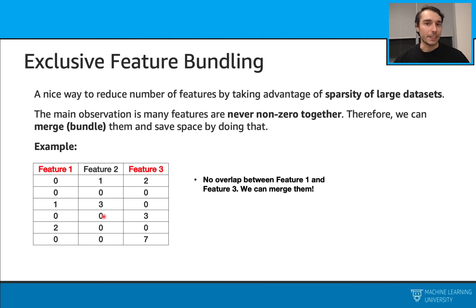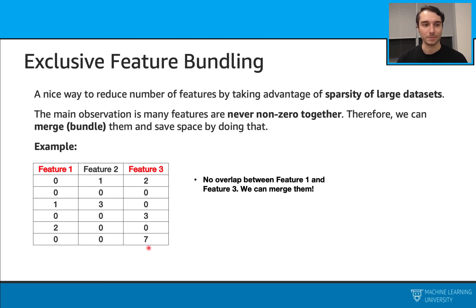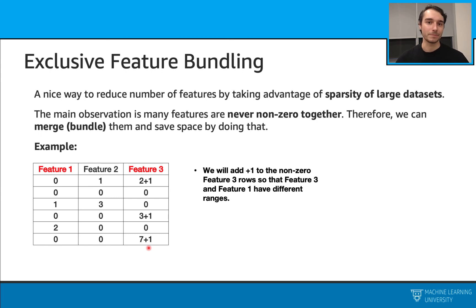Let's look at features one and three. This time it works because we don't have that overlap. Let's go through the rows: zero and two — works; zero, zero — works; one, zero — works; zero, three — works; two, zero — works; zero, seven — works. So we can merge them. Let's merge and bundle them.